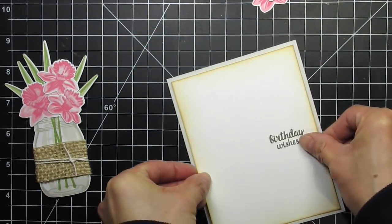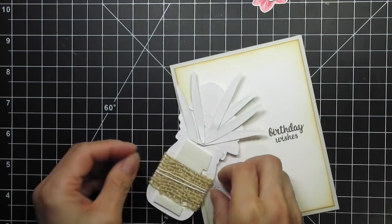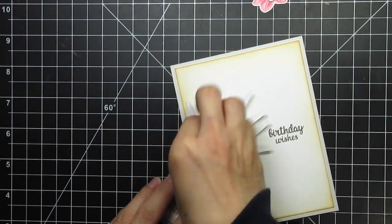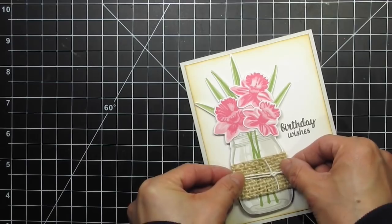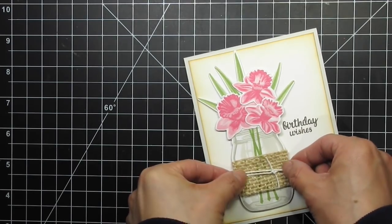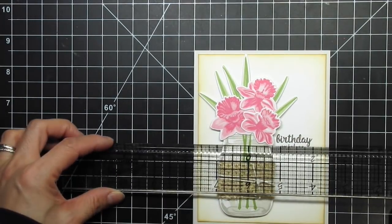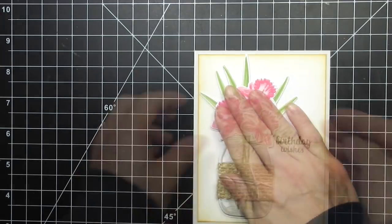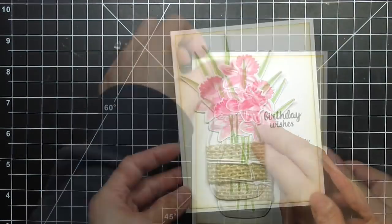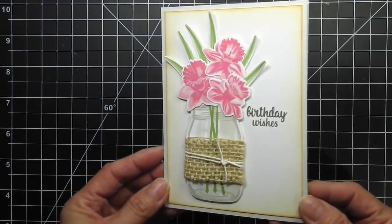Now I can assemble the card. First, I adhere the panel to the card base, then I trim the ends of the leaves where they interfere with the placement of the foam tape and add more foam tape behind the flowers. I use my design ruler to make sure the jar is straight, and then use my fingers and a craft knife to lift up and curl the ends of the leaves for more texture and visual interest. Now my card is done!